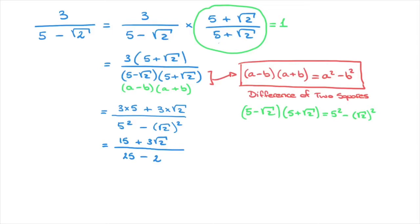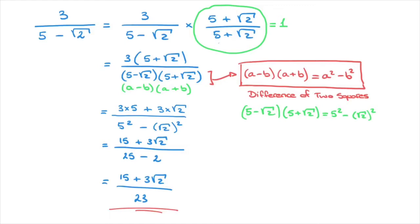Finally, we can state that this equals 15 plus 3 root 2 over 23, and we're done. We've just rationalized this denominator. We can see that on the denominator we no longer have any radicals or square roots — it's been rationalized.